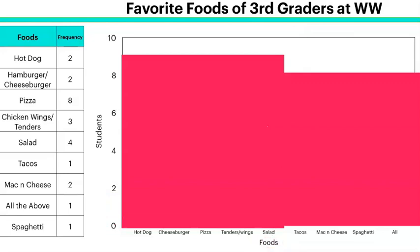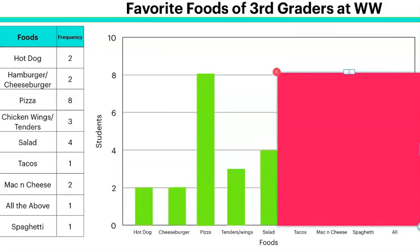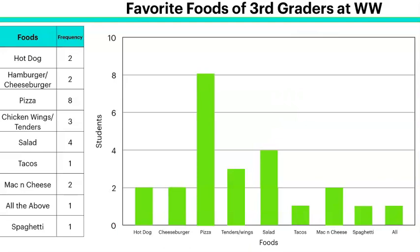Looking at this bar graph, I can easily see that people like pizza the best. I can also see that three foods got the same number of votes. Just by looking at the graph, I can quickly see which ones have the most votes, which have the same votes, and which have the least — without having to go back through a frequency table.